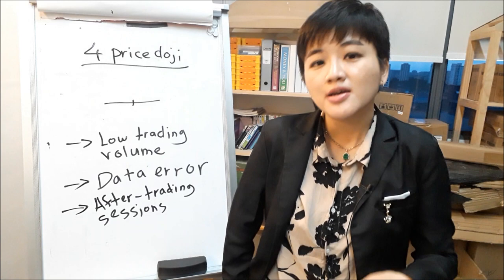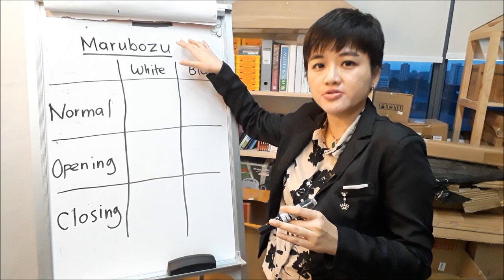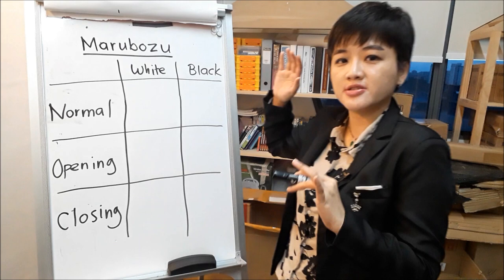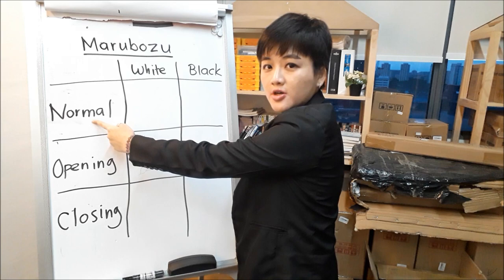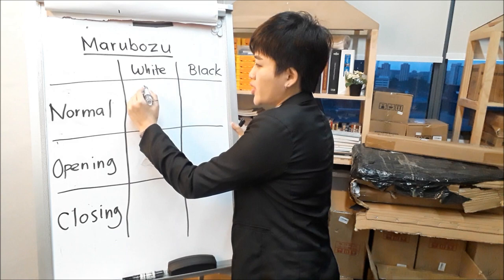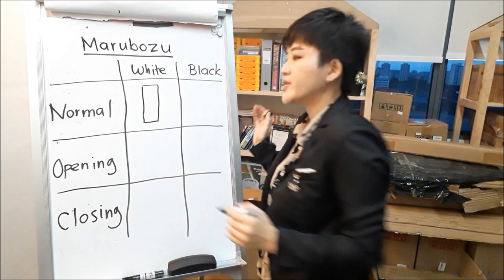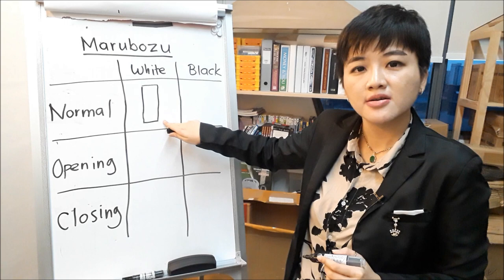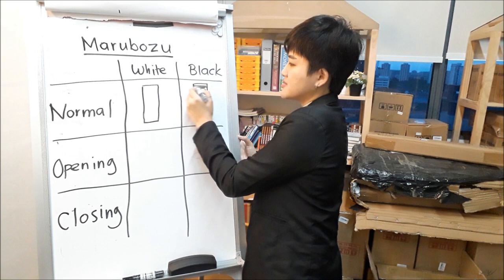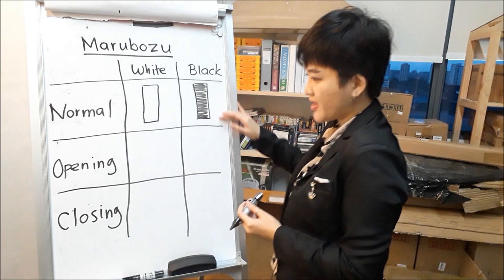Let's talk about another pattern called the Marubozu. Basically, it's just a candlestick with a very long, large body — length and size matter. The perfect white Marubozu has a long white body with no upper shadow and no lower shadow. The black Marubozu is the same thing, only it is a bearish candlestick — black in color.